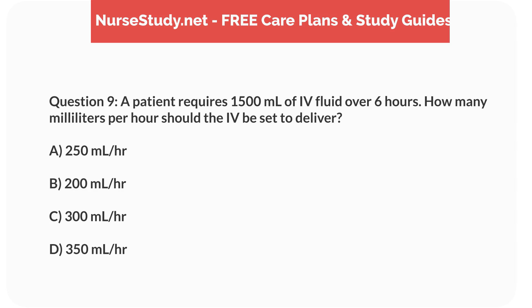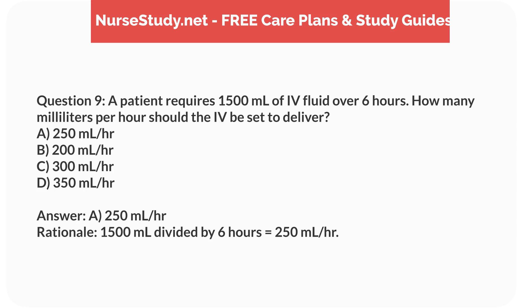Question 9. A patient requires 1,500mL of IV fluid over 6 hours. How many milliliters per hour should the IV be set to deliver? a. 250mL per hour, b. 200mL per hour, c. 300mL per hour, d. 350mL per hour. Answer: a. 250mL per hour. Rationale: 1,500mL divided by 6 hours equals 250mL per hour.